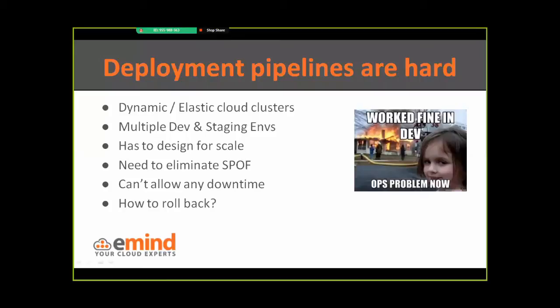More and more companies deploy continuously, and even those that don't deploy more often than they used to. These frequent deployments happen on dynamic clusters that auto-scale in multiple staging, testing, and production environments. The pipeline needs to be designed to withstand large peaks in traffic, and still be highly available with no single point of failure. These are all production systems with users on them, and we need to deploy our code with zero downtime on a live system.